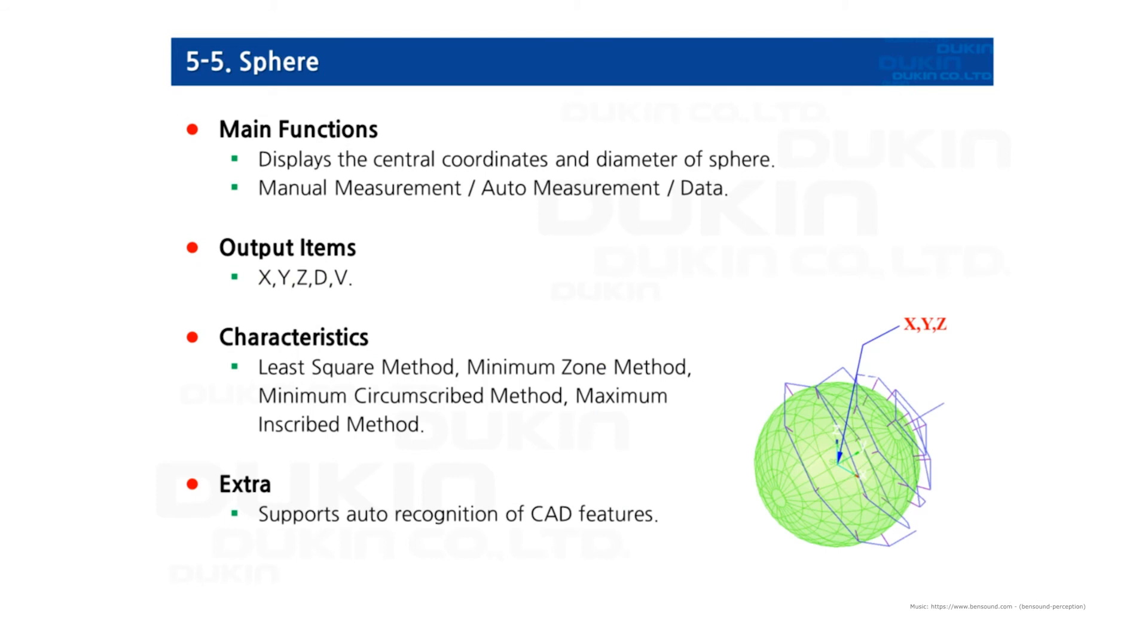For the next, sphere. The minimum measuring point required of measuring a sphere is four points. It outputs X, Y, Z value on the center of the sphere and diameter. The calculating methods are applied the same as the circle one.